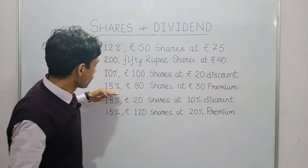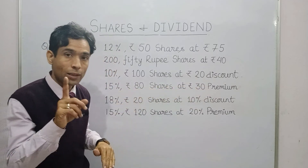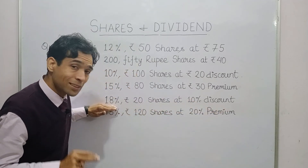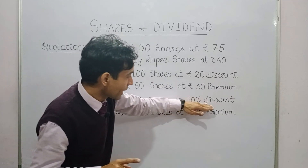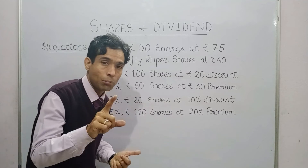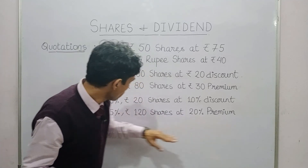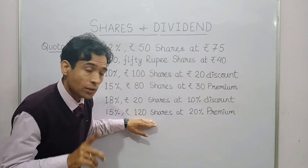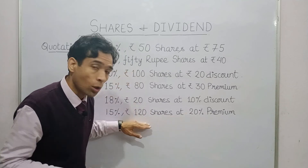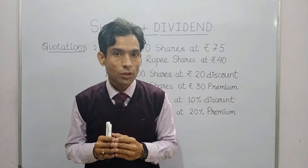Fourth: '15% ₹80 shares at ₹30 premium' — 15% is dividend, ₹80 is nominal value, add ₹30 to get market value of ₹110. Fifth: '18% ₹20 shares at 10% discount' — 18% is dividend, ₹20 is nominal value, 10% of 20 = ₹2 discount, so market value = ₹18. Sixth: '15% ₹120 shares at 20% premium' — 15% is dividend, ₹120 is nominal value, 20% of 120 = ₹24 premium, so market value = ₹144.